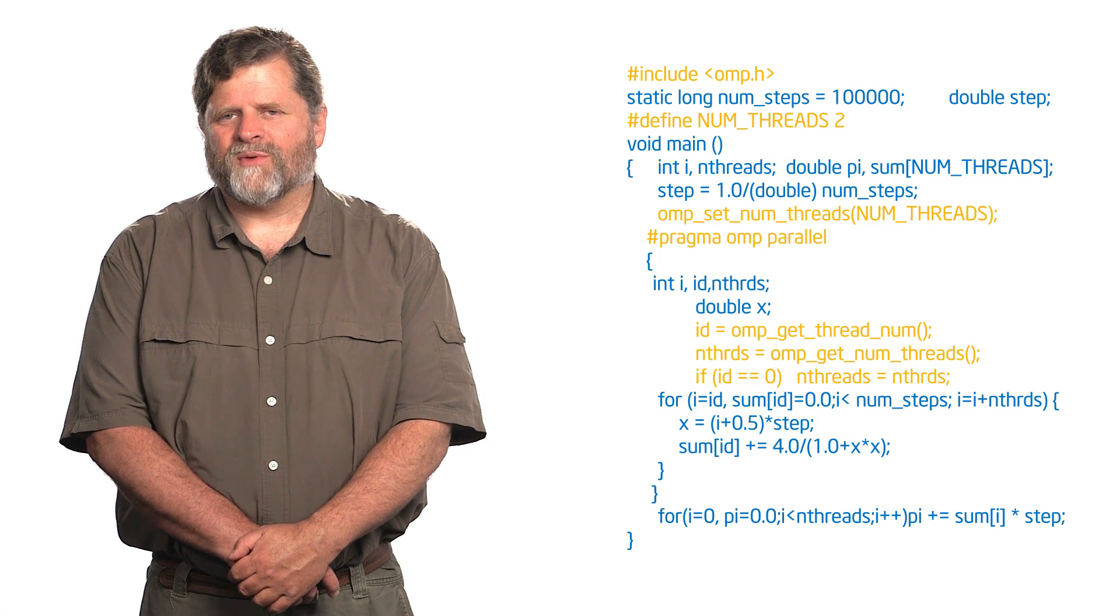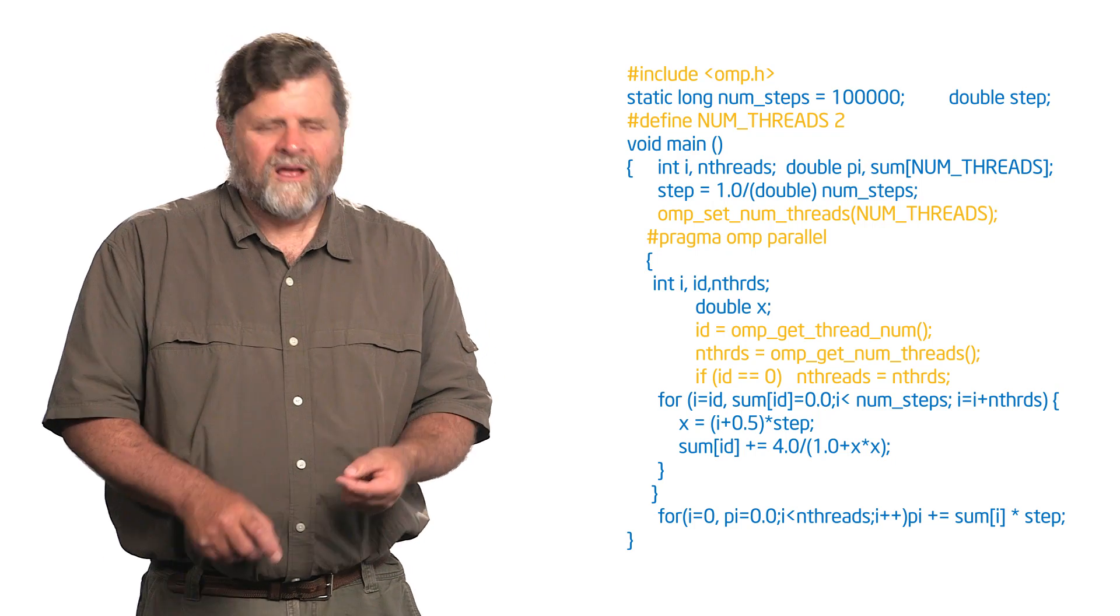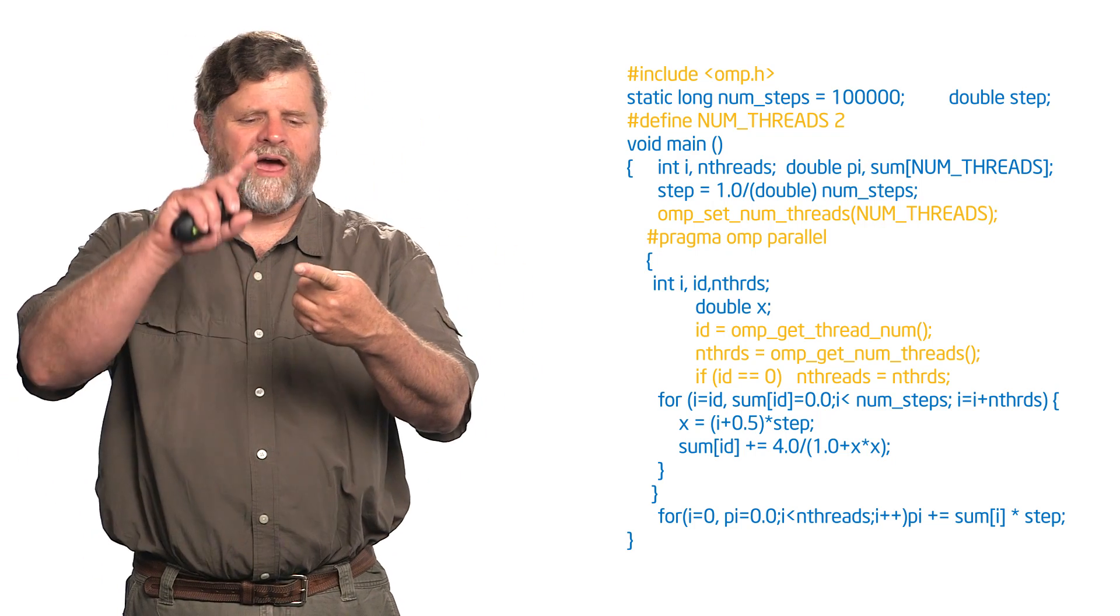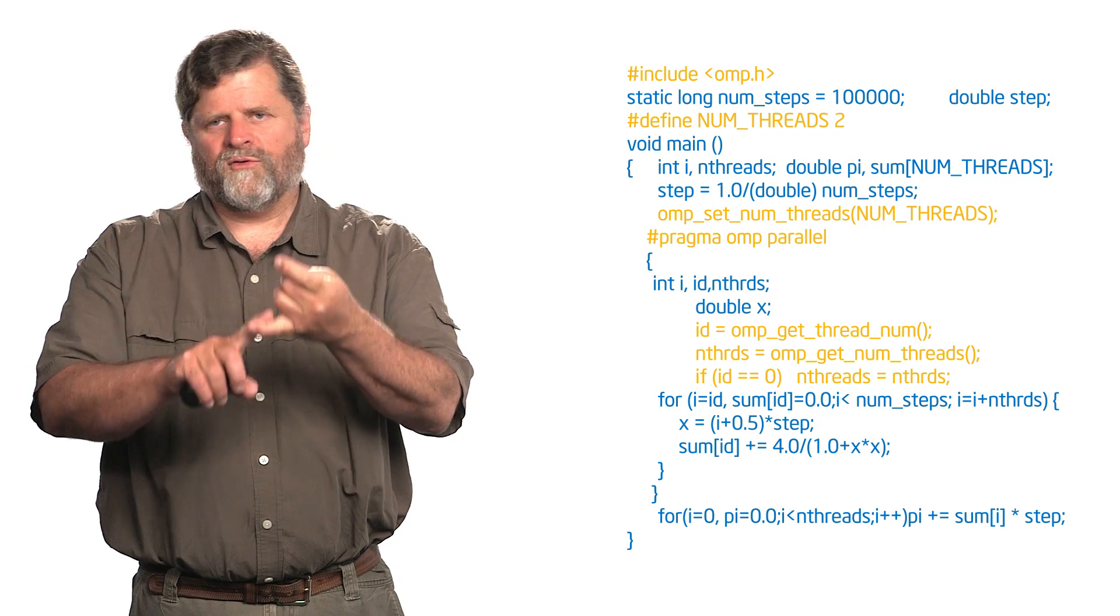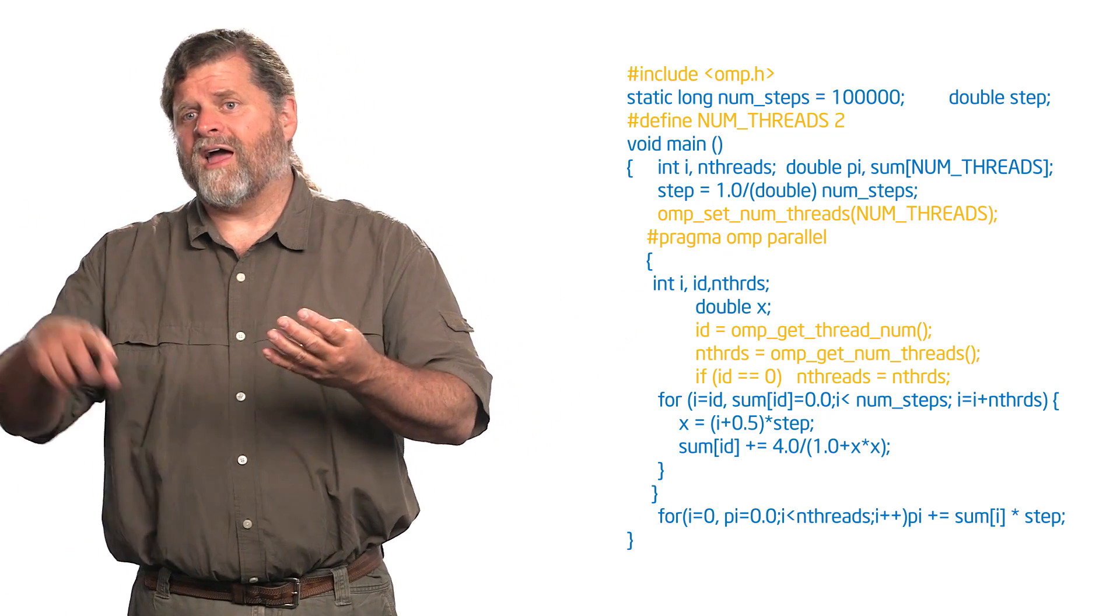What this is is it's like dealing out a deck of cards. Thread number zero got, let's say there were four threads, iteration zero and four and eight and twelve. Thread number one got iteration one and five. This is a really easy way. It's a cyclic distribution. We sometimes also call this a round robin distribution, or you can think of it as dealing out a deck of cards.